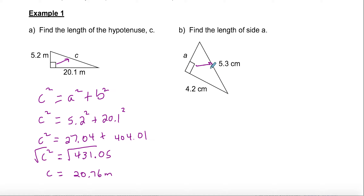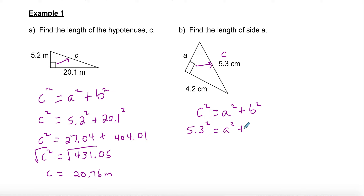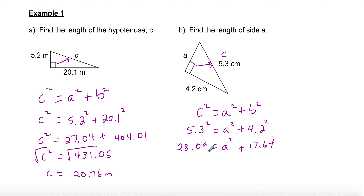The second type of Pythagorean theorem question: you know side c but not one of the legs. In example two, side c is 5.3 (across from the 90°). Write c² = a² + b²: 5.3² = a² + 4.2². Calculate: 5.3² = 28.09, and 4.2² = 17.64. You can't just add these — you need to isolate a.